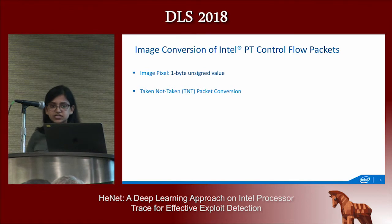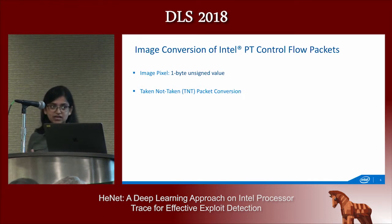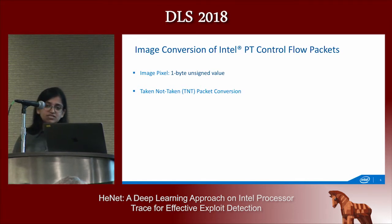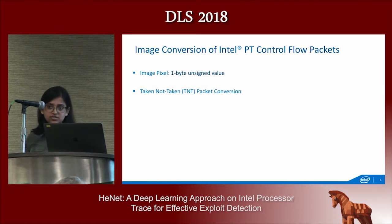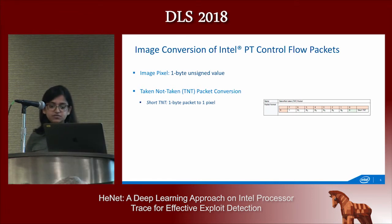By combining Intel PT data with the image binary, we can reconstruct the exact sequence of instructions executed on the CPU, but that takes a long time due to the large volume of trace data. We noticed that control flow packets can be used as an encoded representation of control flow transfers over time. So we designed a lightweight conversion of control flow packets to image pixels, where each image pixel is one byte unsigned value. For short TNT packets of one byte, each bit B1, B2 represents one conditional branch, so we convert the whole one-byte packet to one pixel value.